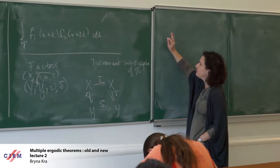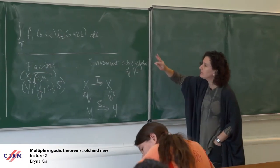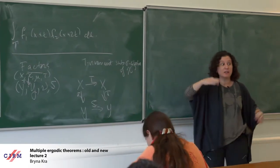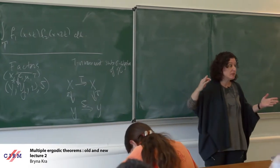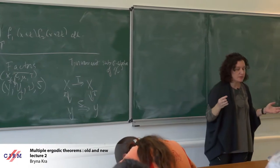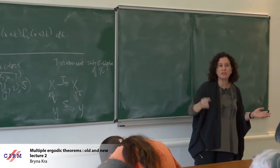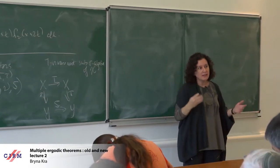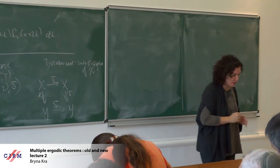The simplest way to construct factors would be to take the product of two systems and then each of the original systems is a factor of the product system. This will not be so interesting for us.